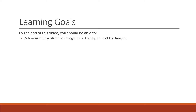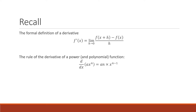A couple of things to recall: first of all the formal definition of the derivative. This will be useful if we need to find our instantaneous gradient and we don't know the rule. But if we do have a power or polynomial function, we have the power rule — the power comes to the front and the power goes down by one.